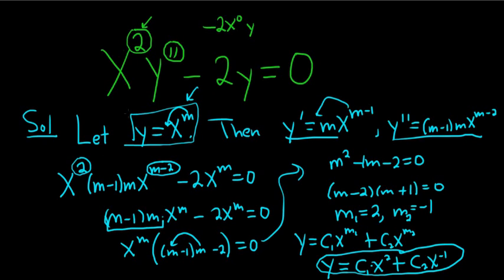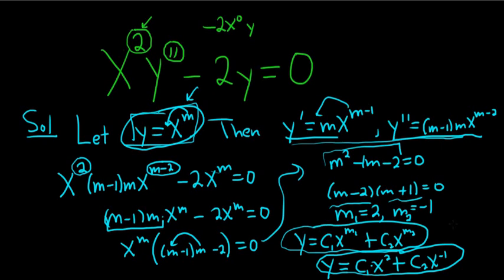So quick recap. Whenever you have a Cauchy-Euler, start by letting y be x to the m. Take the derivatives, plug them in, simplify. You'll get some type of equation. In this case, we have distinct real roots. So the formula for distinct real roots is this one. And then all we do is plug in the numbers and that's it. It's pretty easy. I hope that made sense.